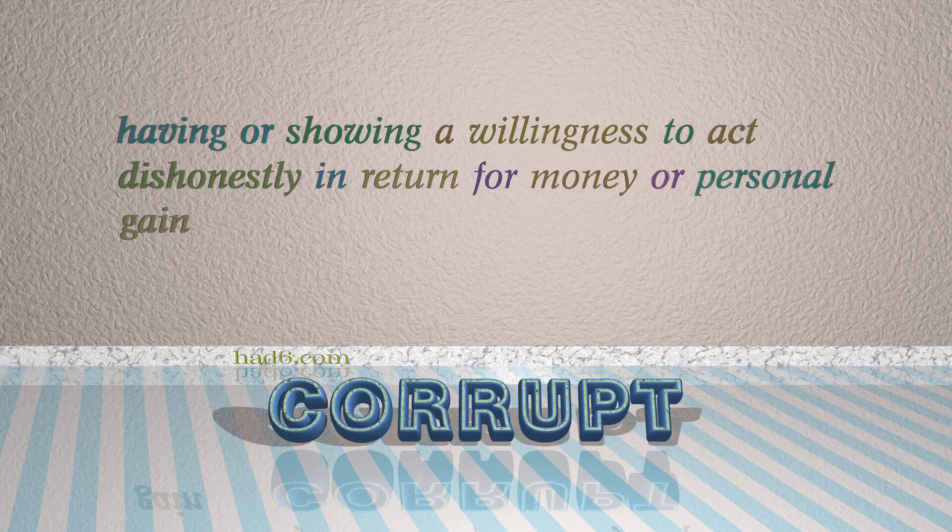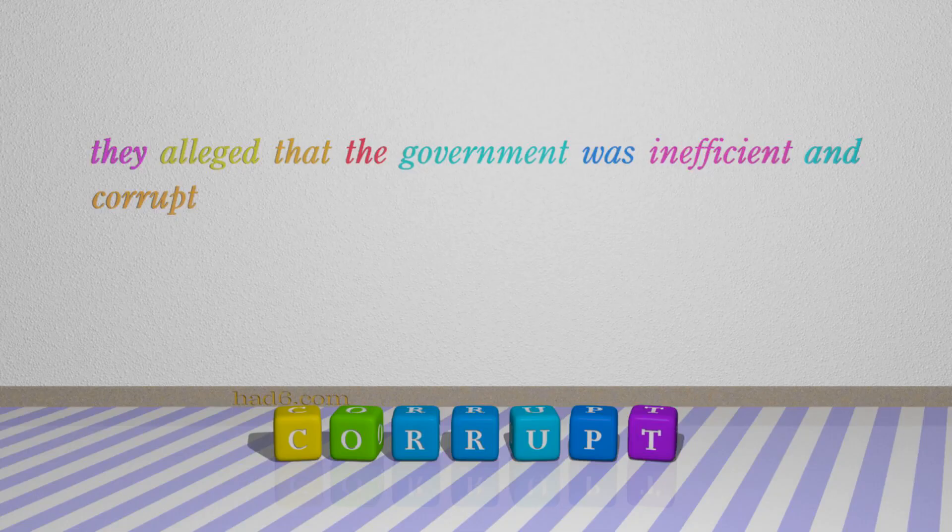Number 5: Corrupt. Which means having or showing a willingness to act dishonestly in return for money or personal gain. For example: They alleged that the government was inefficient and corrupt.